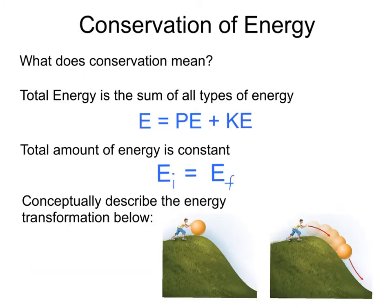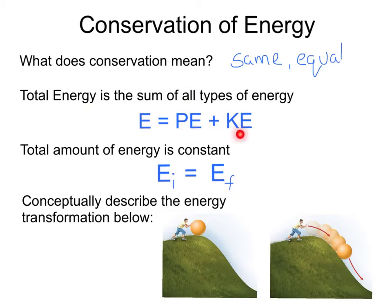Conservation of energy — what does conservation mean? Well, it's really a fancy physics word for 'the same' or 'equal.' That is, the total energy is the sum of all types of energy. So our total mechanical energy would be the sum of the potential energy the object has plus the kinetic energy the object has.